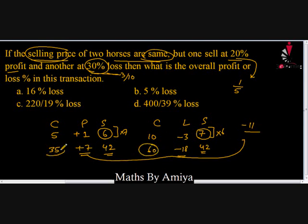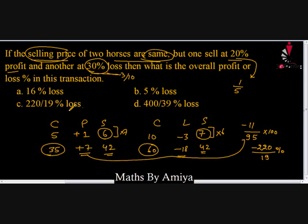The loss percent is always calculated on the total cost price. Total cost price = 35 + 60 = 95. Loss percent = (11 / 95) × 100 = 220/19 percent. The negative sign confirms it is a loss, so the answer is option C.